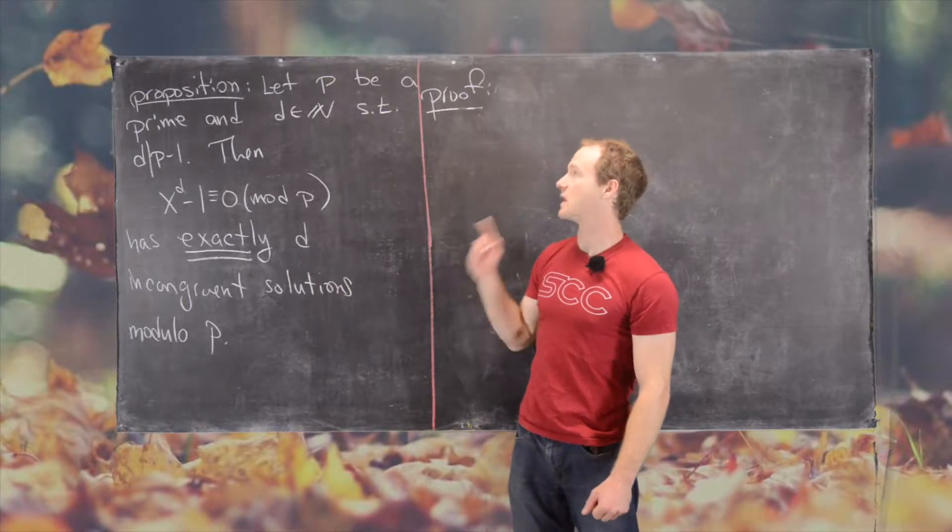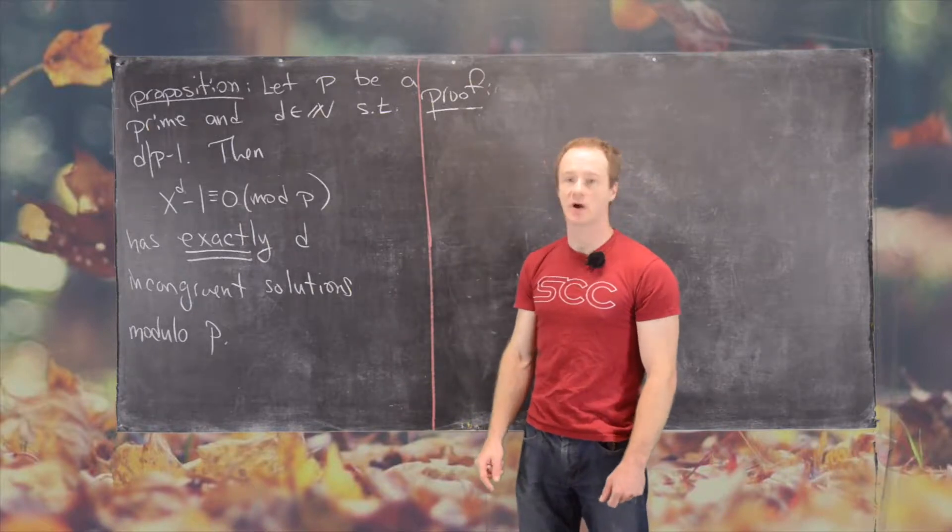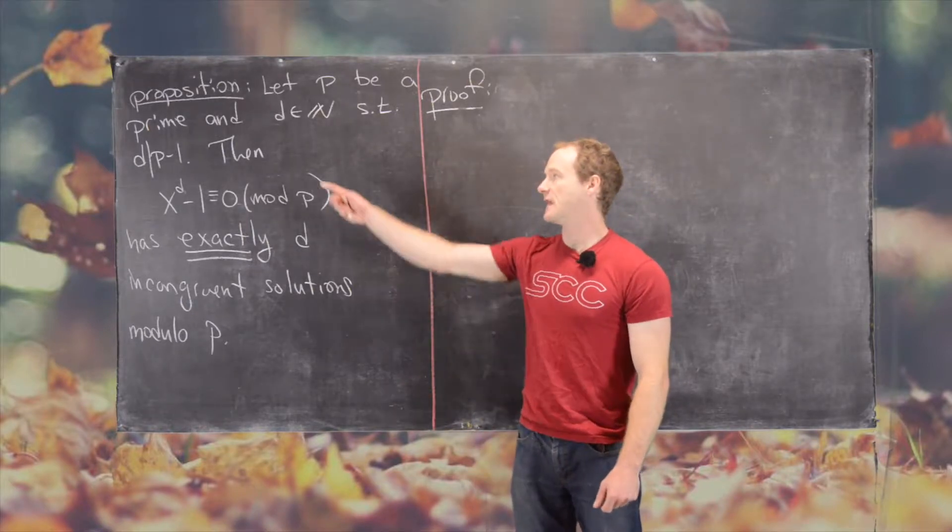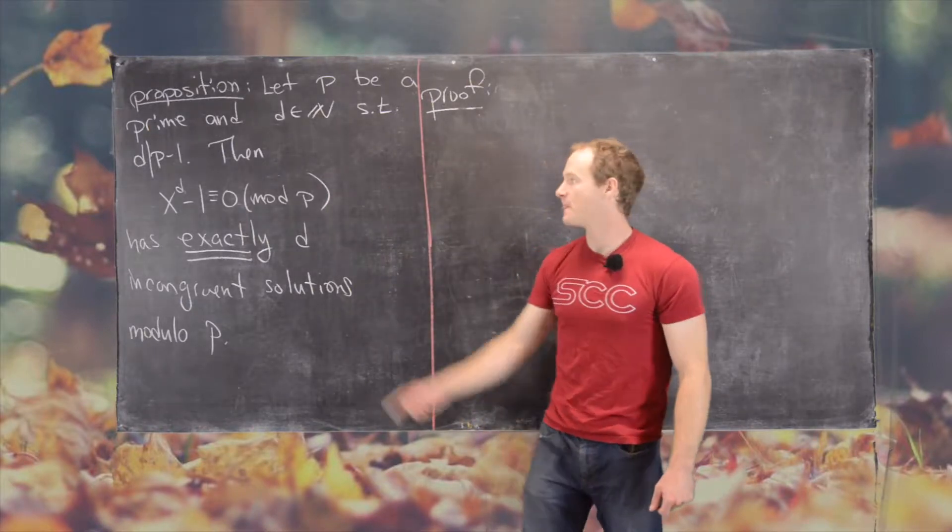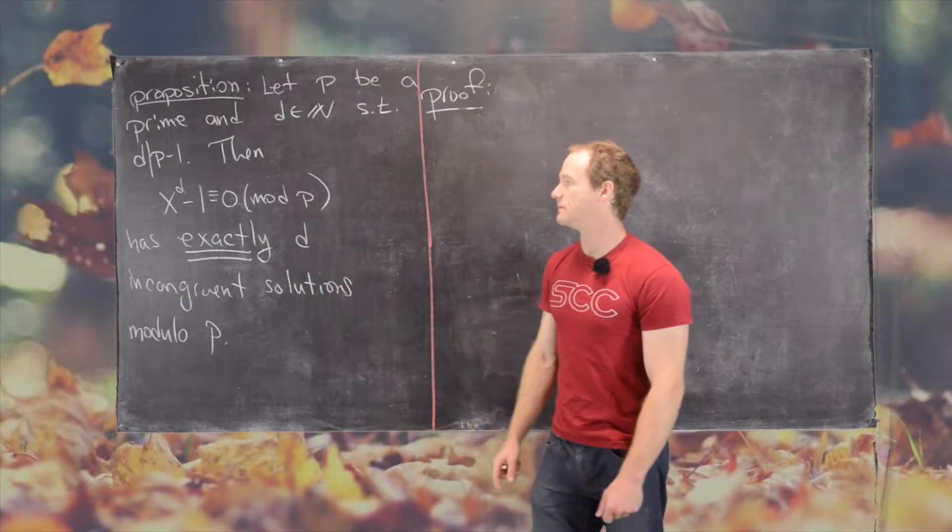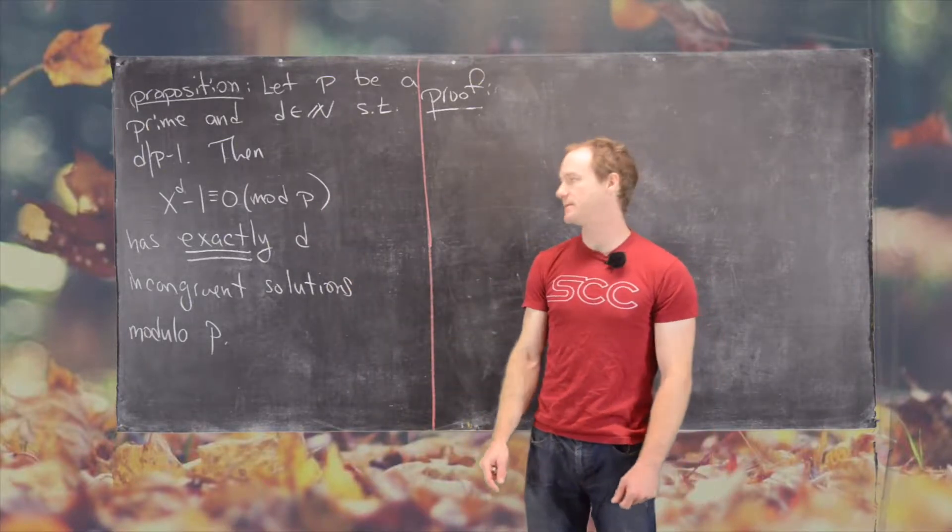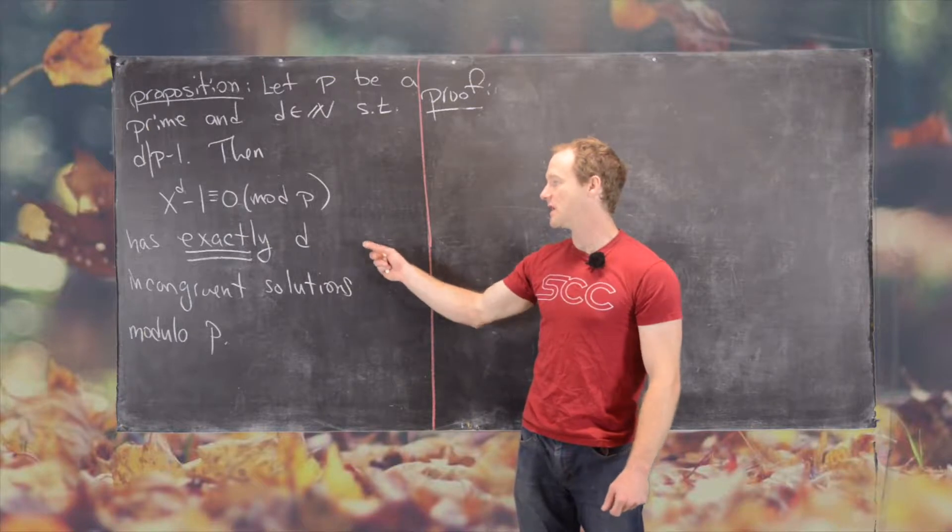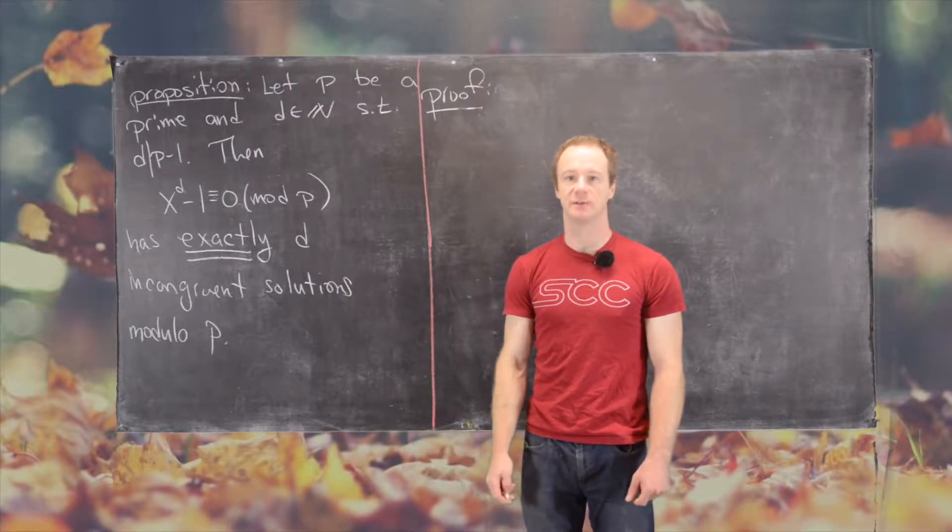And this result reads as follows. Let p be a prime and d be a natural number that divides p minus 1. Then x to the d minus 1 is congruent to 0 mod p has exactly d incongruent solutions modulo p.